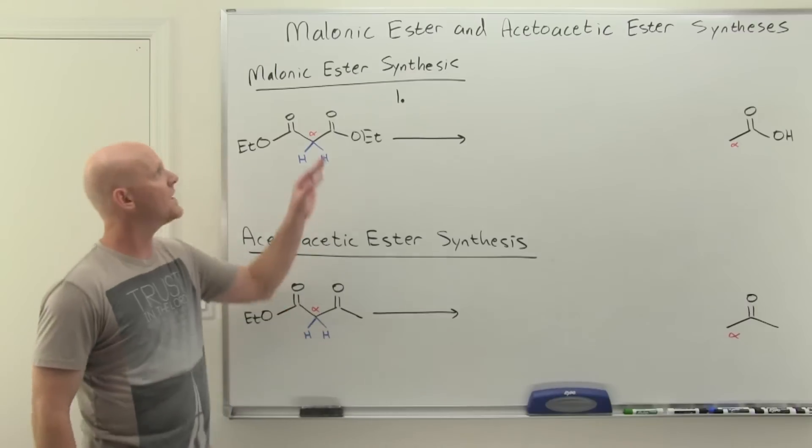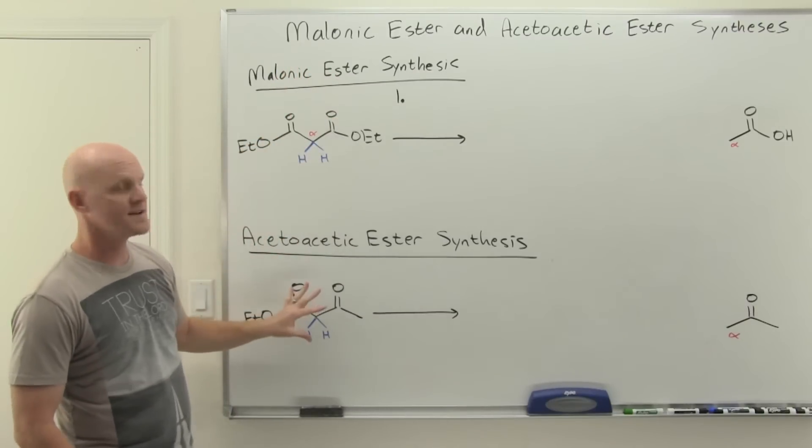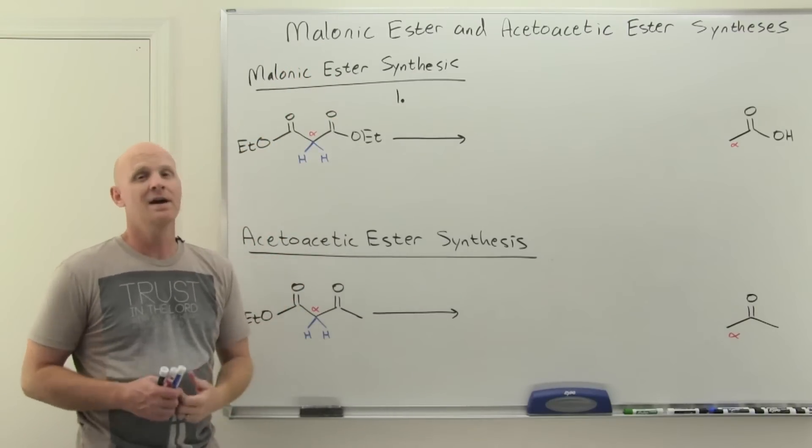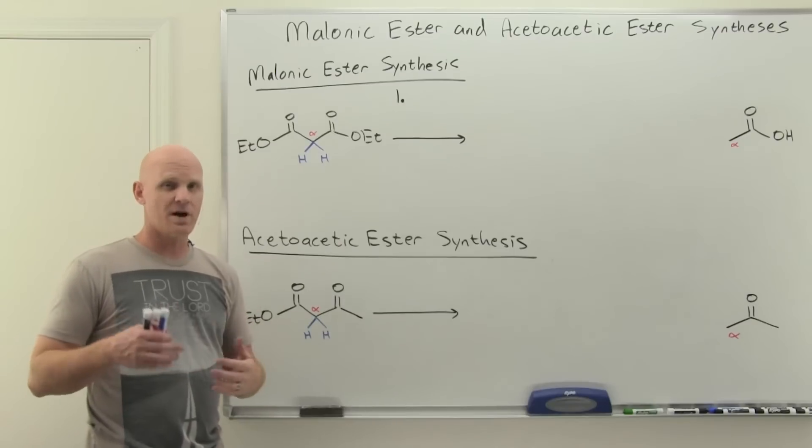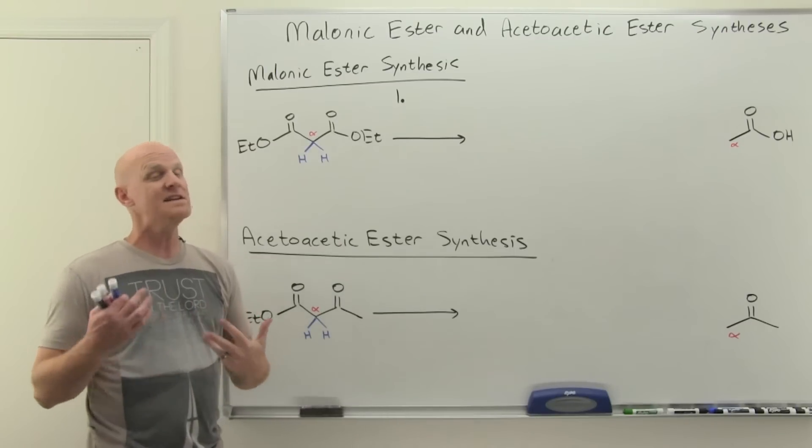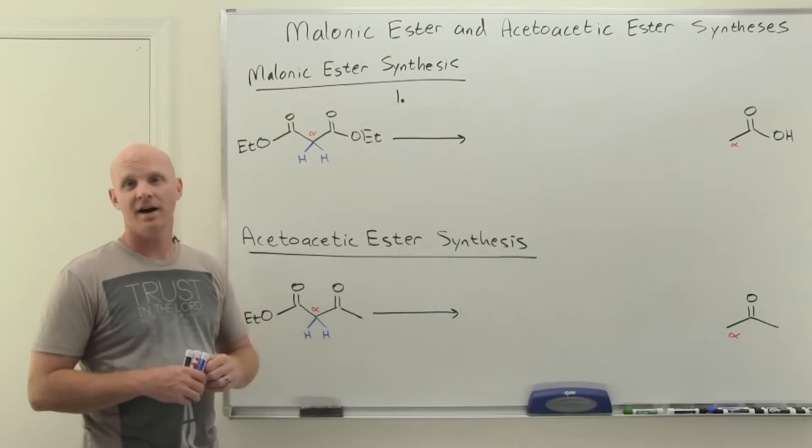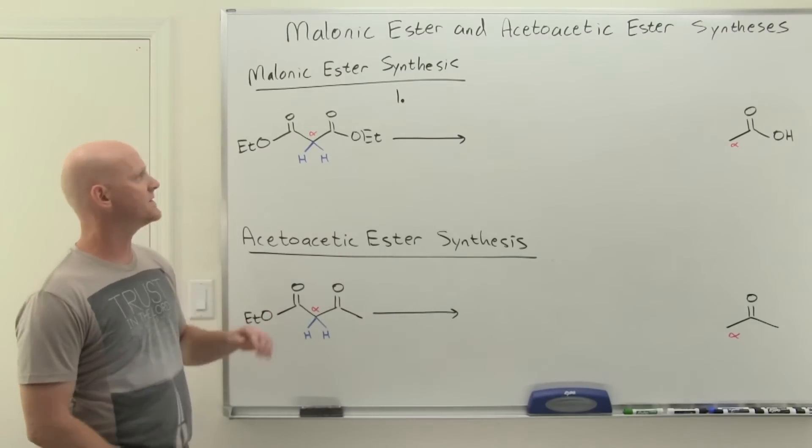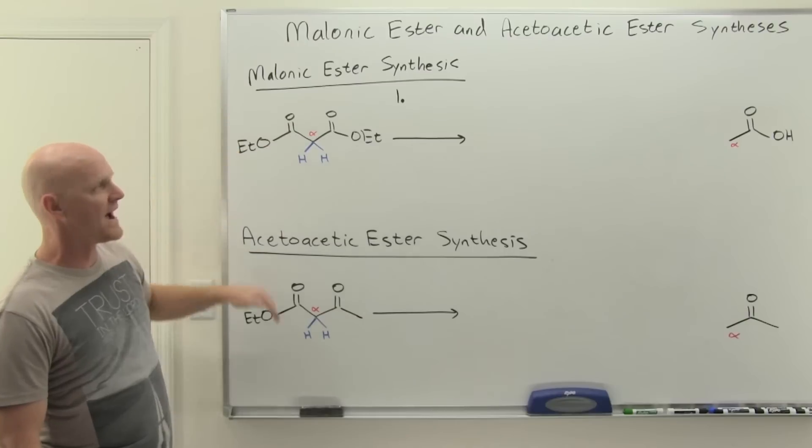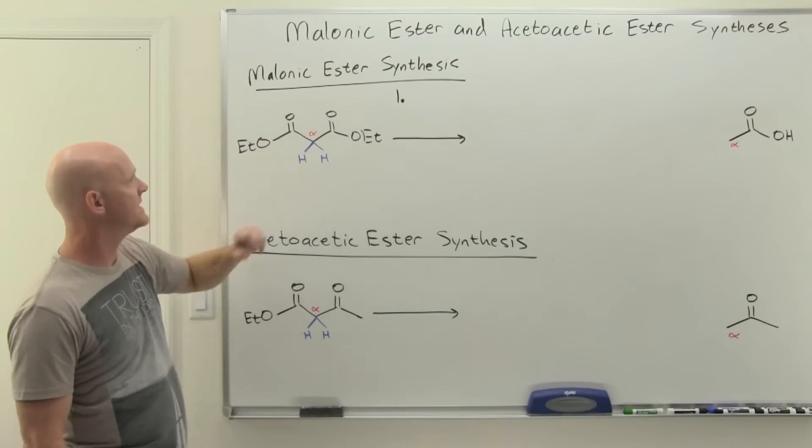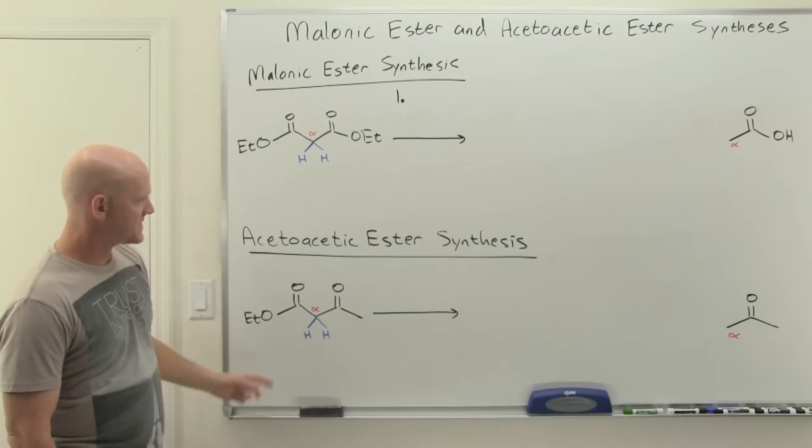We're going to look at the malonic ester synthesis and the acetoacetic ester synthesis in parallel because they're very similar. The sequence of reagents and stuff like that is nearly identical with just the variability being what do you want that's variable on your final product. They get their names from the original reactant. This is malonic ester right here.